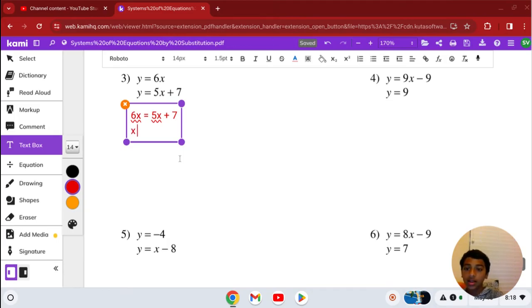So you have x equals, and then you have nothing but 7. That's all you have. So that's x equals 7.